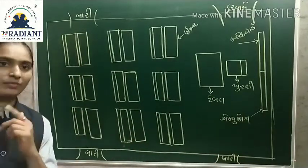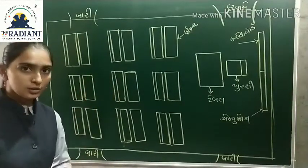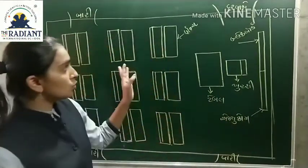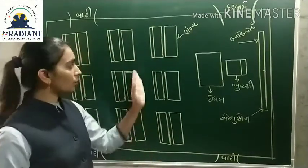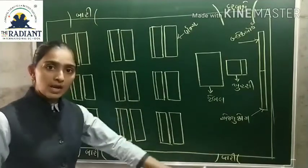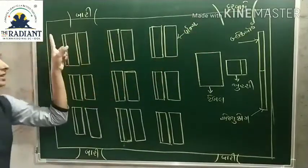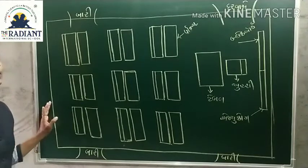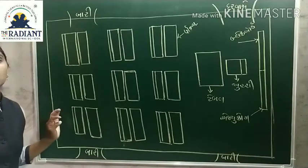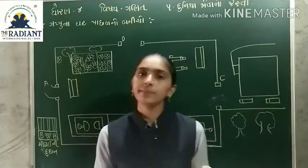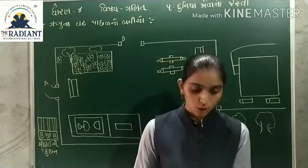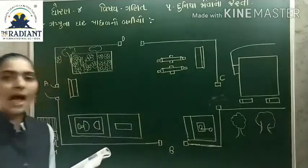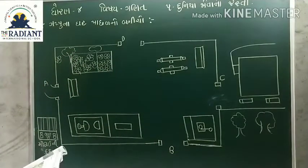હા, કોણ કહેશે? Very good! આ ચિત્ર આપણા વર્ગ ખંડ નું છે. જેમાં સામે શું હોઈ છે? બ્લેક બોર્ડ છે અને અક્ષ-ચોકઠું પણ છે. આ આપણા વર્ગ ખંડ નું ચિત્ર છે. ચાલો, હવે આ નંબર સ-ના નીચે આપ્યા છે તે પ્રશ્નોના જવાબ આ નક્શા ઉપરથી આપવાના છે.